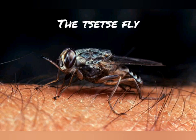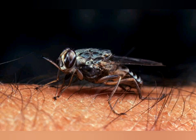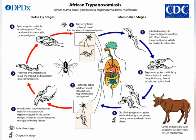The life cycle of the Trypanosoma species is a little bit complex, but I'll try to go through it. First, the tsetse fly takes a blood meal from a human and injects what is known as metacyclic trypomastigotes — the protozoa it injects into the blood. These metacyclic trypomastigotes then transform in the bloodstream into trypomastigotes, which are carried to other sites.